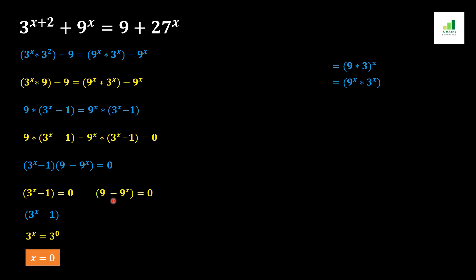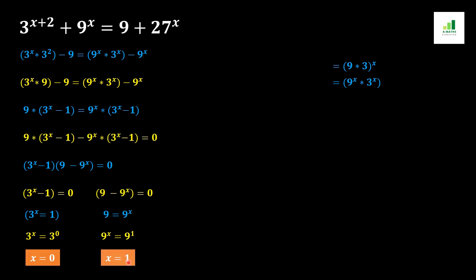Now we simplify the second condition: 9 minus 9 to the power x equals 0. The minus 9 to the power x moves to the other side and becomes positive 9 to the power x. We can see that 9 on the left has an implicit power of 1. Applying the same basic rule of algebra — if the bases are equal, their powers are also equal — both bases are 9, so x equals 1. That is our second solution.